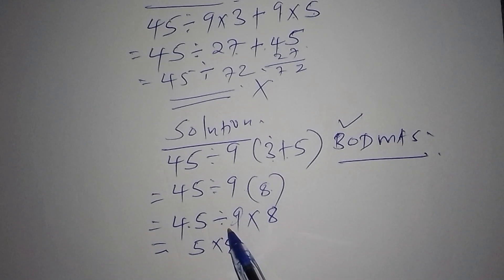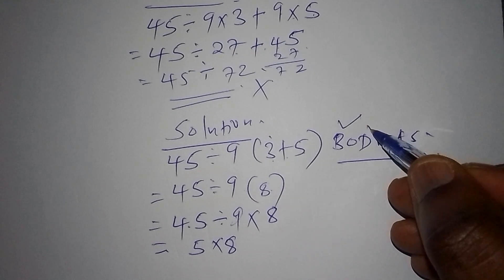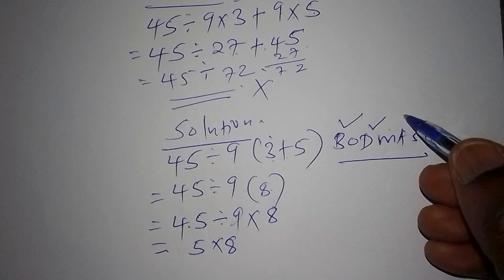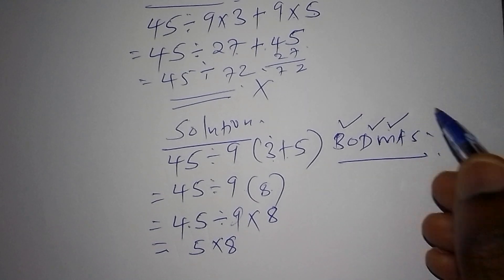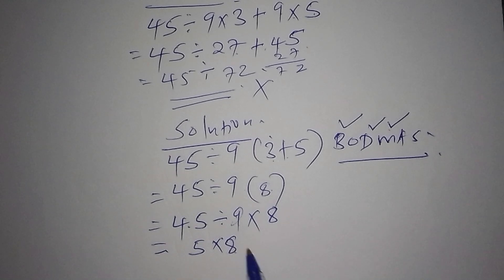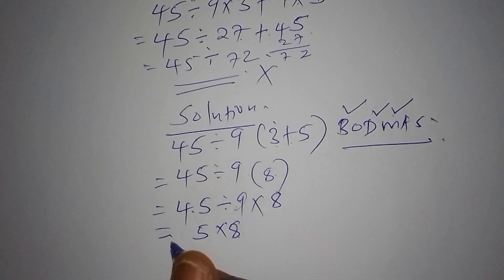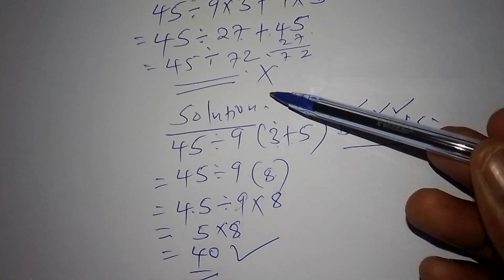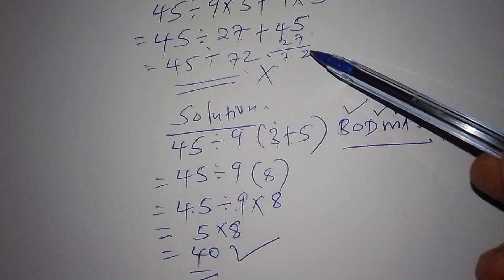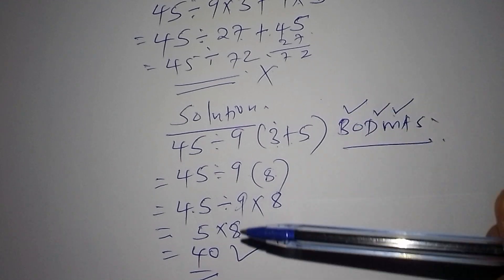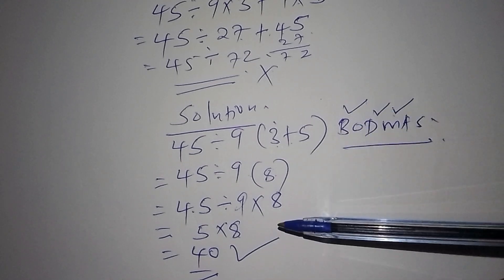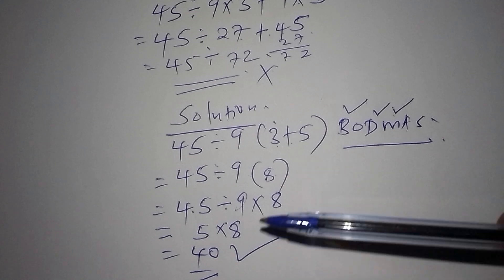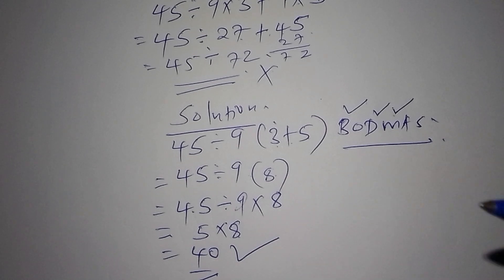That's why we did the division first, then moved to the multiplication. We multiply 5 by 8, and 5 by 8 is 40. So our correct answer is 40. When you follow the wrong method, you don't arrive at the correct answer simply because you haven't followed the correct order of operations. If you found this video interesting, please remember to subscribe. Thank you, see you in the next video.